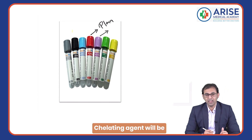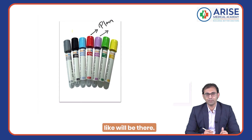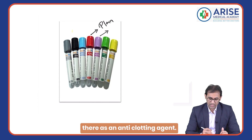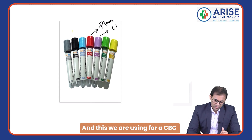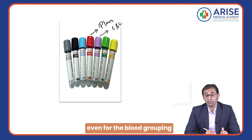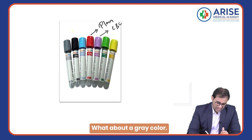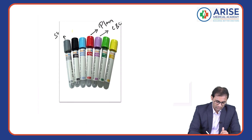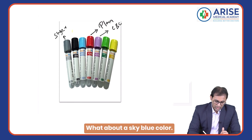The green color tube contains EDTA as a chelating agent. Sodium citrate is also present as an anti-clotting agent. The purple color tube is used for CBC, blood grouping, blood matching, and hemoglobin measurement.